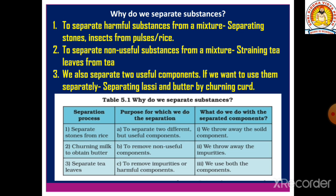The second example is churning milk to obtain butter — we use both butter and lassi. The third example is separating tea leaves from tea. In this case, we remove the non-useful components. These are the reasons why we should separate substances.